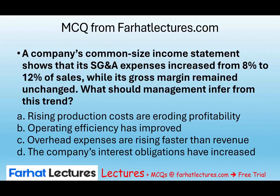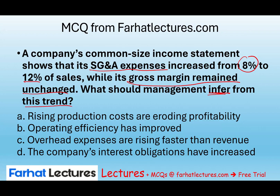Let's take a look at this question from FarhatLectures.com. A company's common-size income statement shows that its selling, general, and administrative expenses increased from 8% to 12% of sales, while the gross margin remained unchanged. What should management — or investors, users, or auditors — infer from this trend?